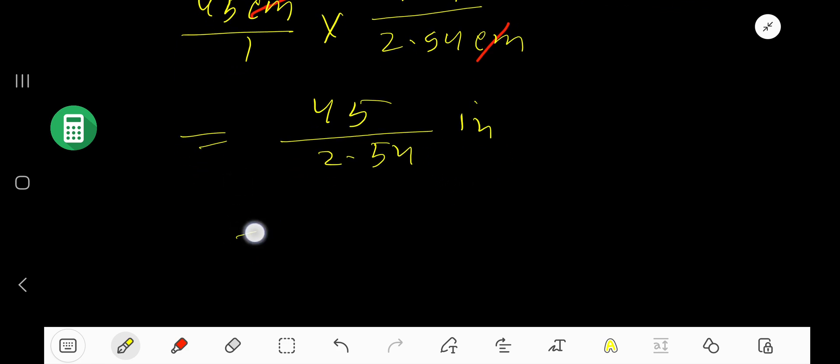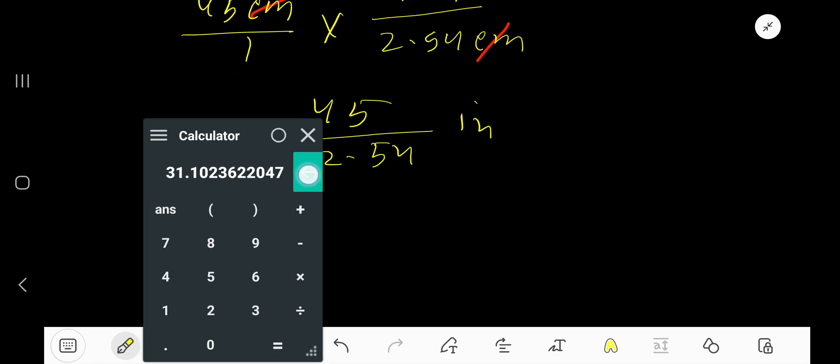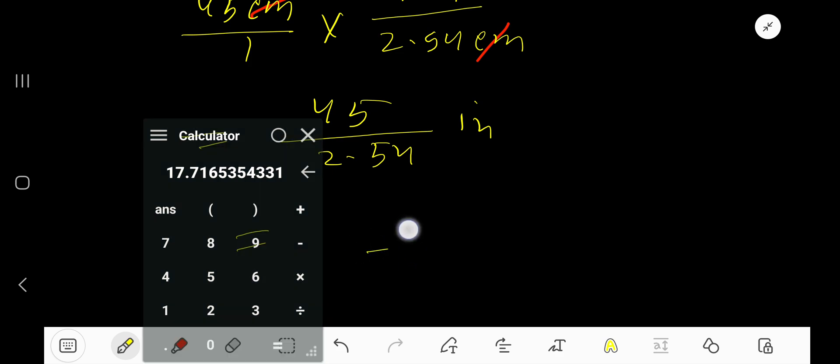inches. So divide 45 by 2.54. 45 divided by 2.54 gives us 17.716 dot dot dot...